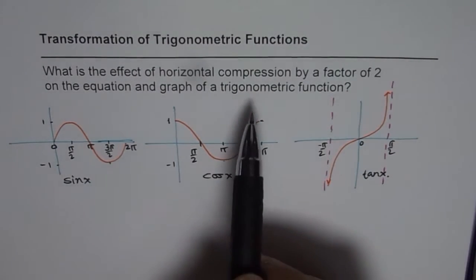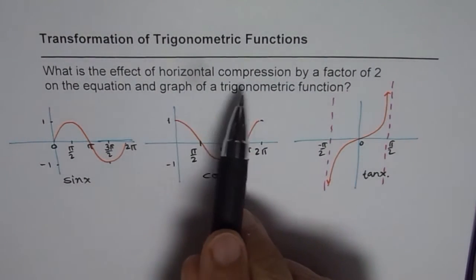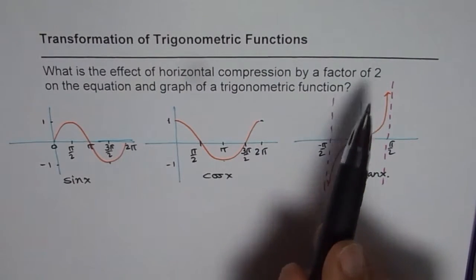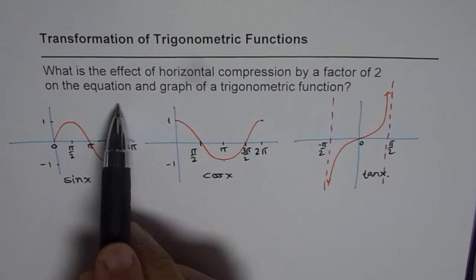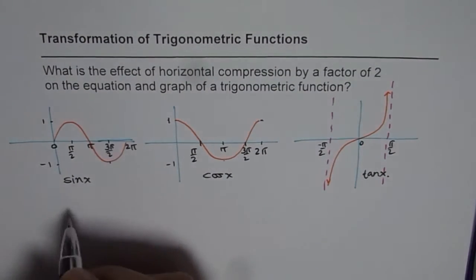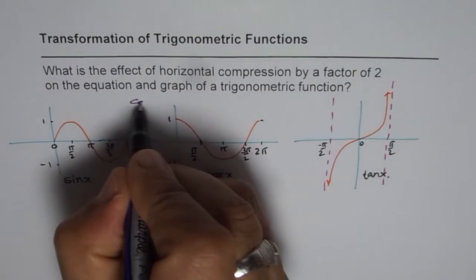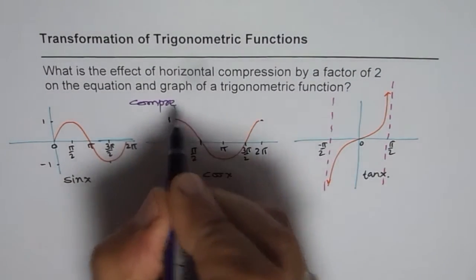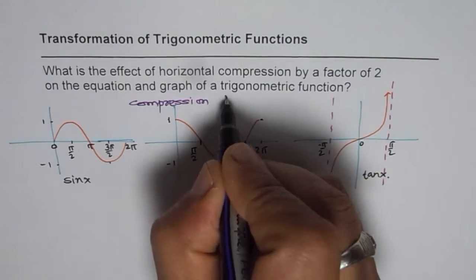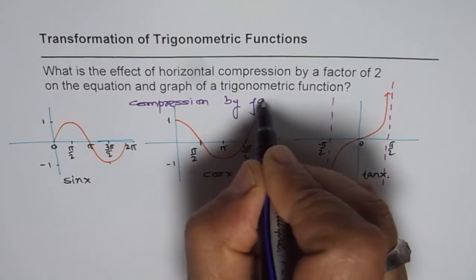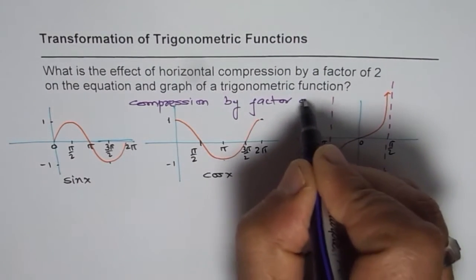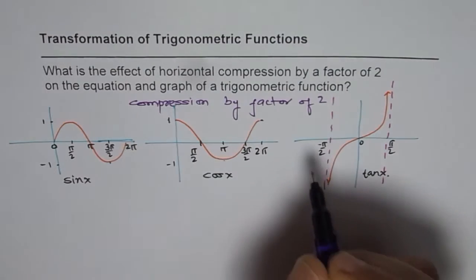Now what we need to check is, if we have horizontal compression by a factor of 2, how does it affect the equation and the graph. So what we are trying to understand here, compression by a factor of 2.